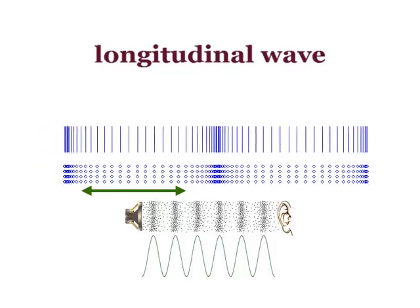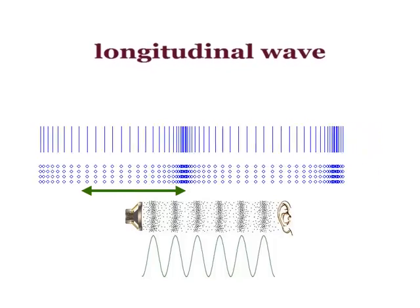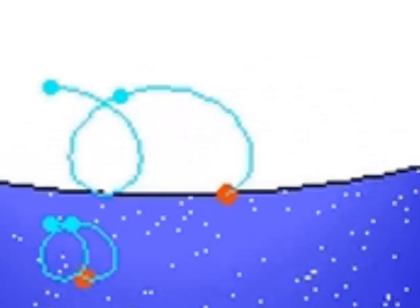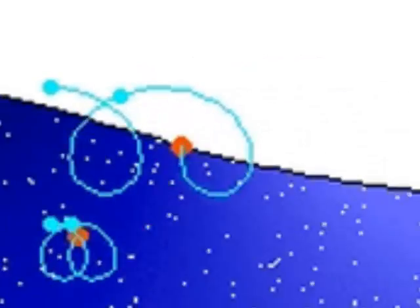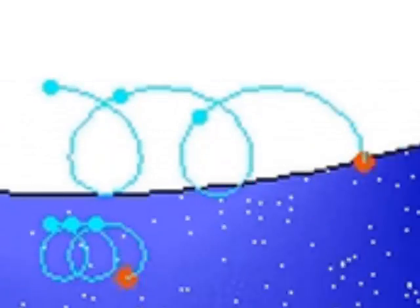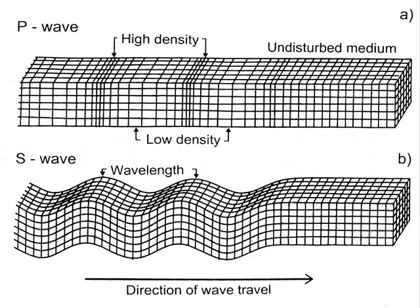Some waves are more complicated. Ocean waves have both perpendicular and parallel motion — a kind of rolling motion. Earthquakes produce both transverse and longitudinal waves. Scientists use the properties of these waves to study the Earth's interior.